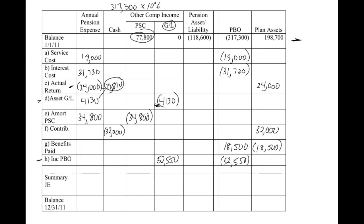So remember the summary journal entry — we're just netting things together. This works out to be 65,660. This is a credit of 32,000. Be careful here — the number up there was just shown as an example; make sure you don't net that in with the cash number. This is 3,480. Make sure you realize the summary journal entry is only including what happened this year — those beginning balances didn't happen this year, so you don't net those in. The Kiso book actually moves a lot of those beginning balances down to the bottom so you don't make that mistake. Whatever you do, just make sure when you're doing your summary journal entry, it's only the stuff that happened during the year.